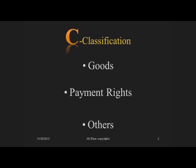Within goods, we subdivide into four categories. First is inventory — goods for sale or leasing. Second is consumer goods — goods used for household purposes. Third is farm products. Any goods that don't fit those three subcategories fall into equipment. The subcategories of goods are important because they raise different perfection issues.